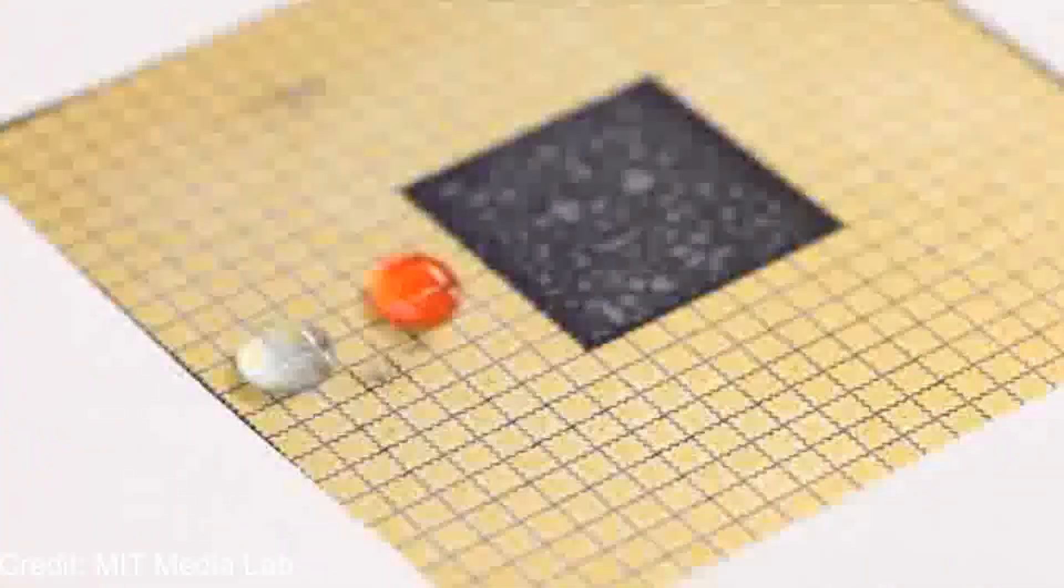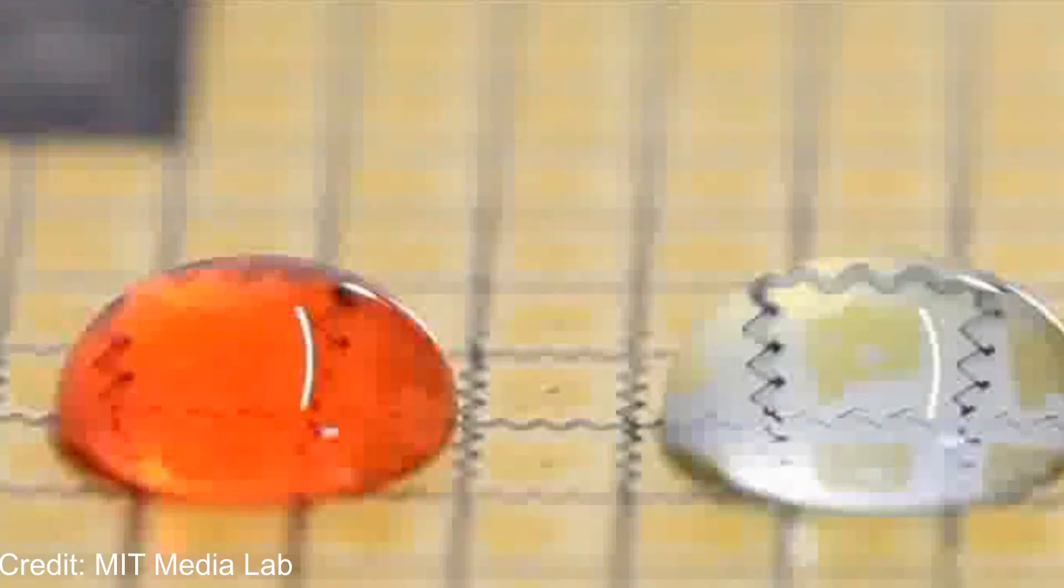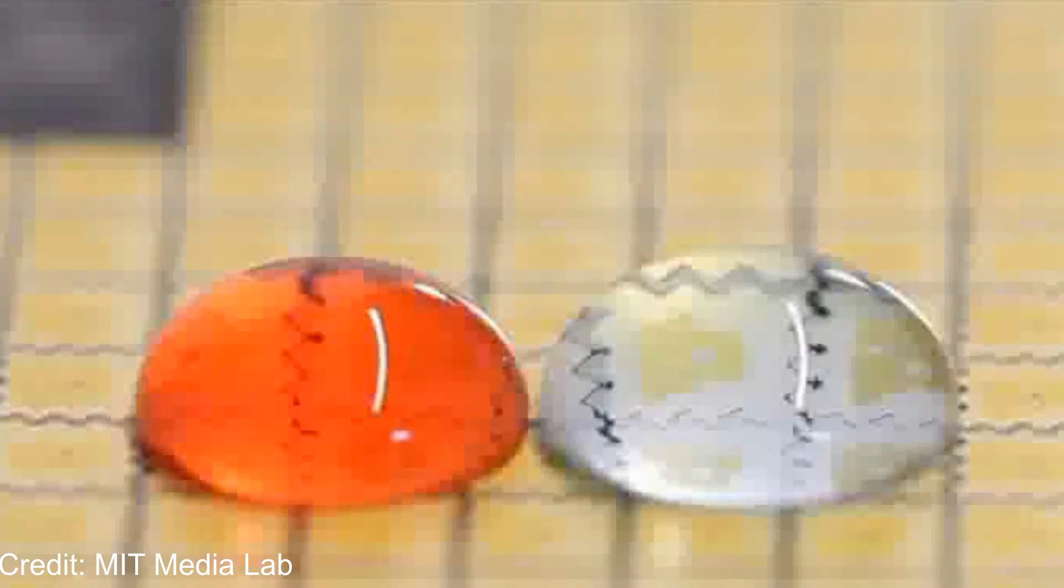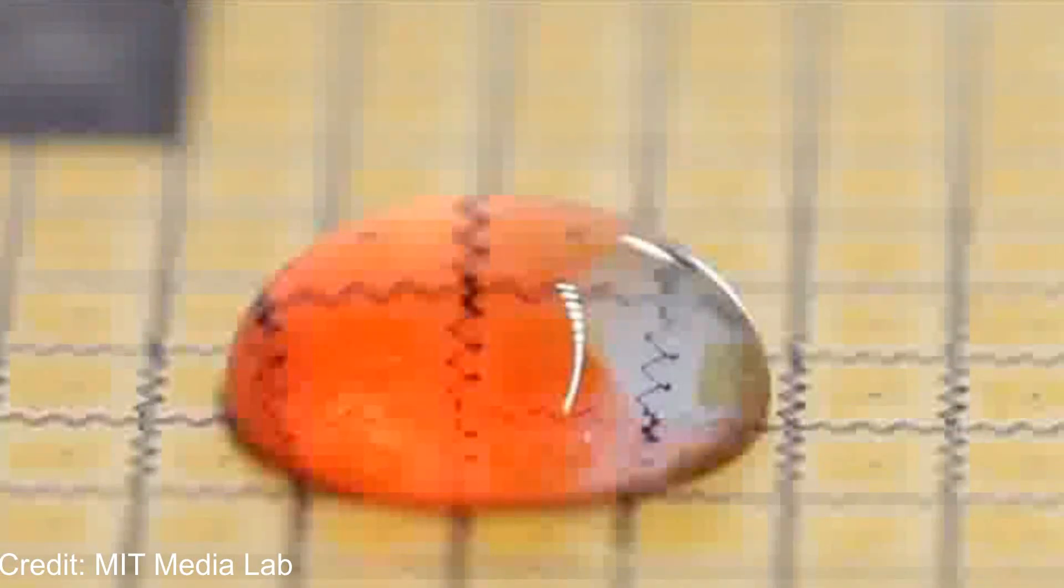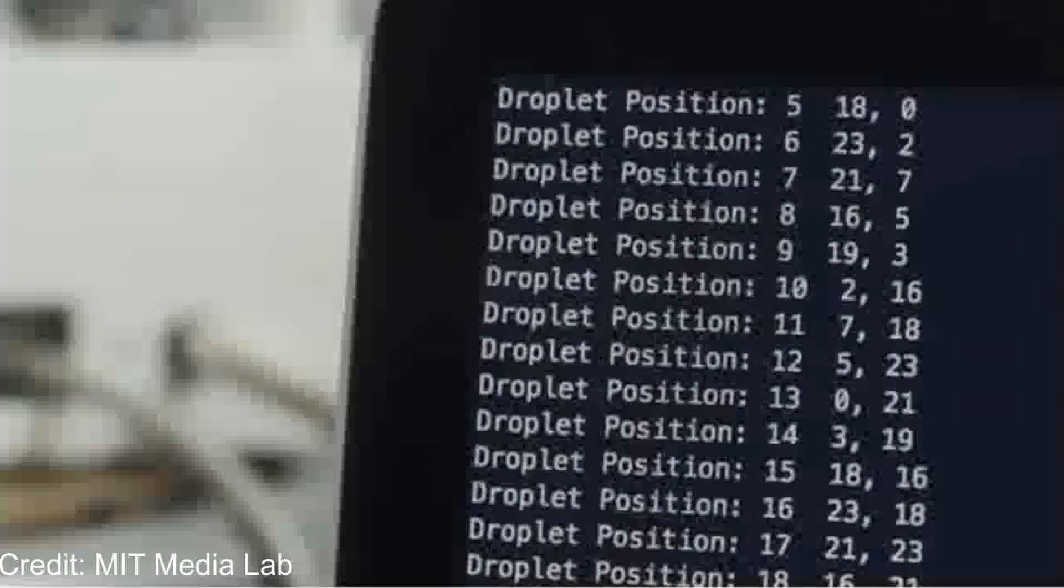All of this is orchestrated with microcontroller logic and custom software. The grid essentially makes a magnetic terrain for liquids. And you can change that terrain just by changing the programming.